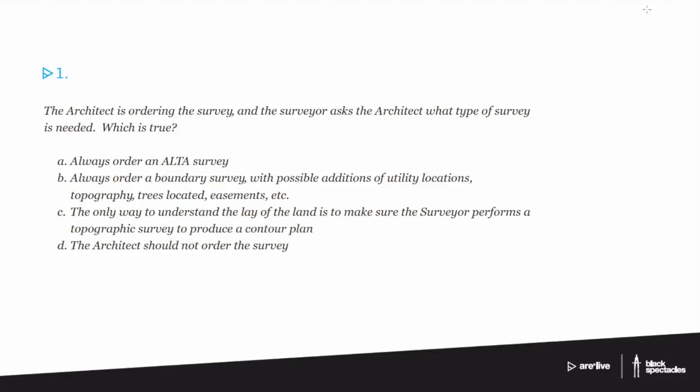All right, so we're looking through those. There's a couple of key words here and this is one of those examples where there's actually a number of kind of correct answers and then there's the actual answer. So if we take a look at A, always order an ALTA survey.